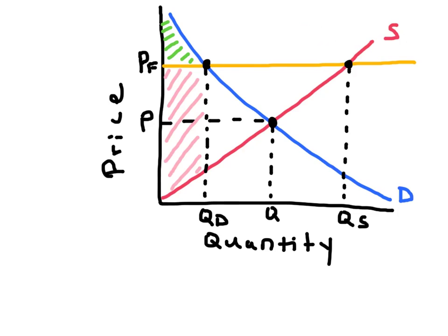A price floor will also change the amount of consumer and producer surplus in a market. Here's the consumer surplus as a result of the price floor — this small green triangle. The consumer surplus before the price floor would have been this larger triangle. The producer surplus is the area shown here in pink. Before the price floor, the area of producer surplus would be above the supply curve and under the initial market price.